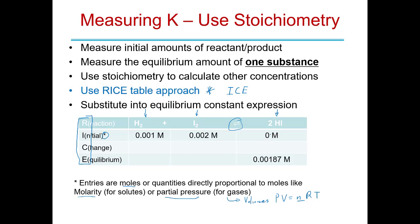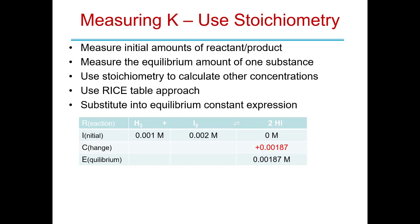We let the reaction come to equilibrium — maybe heating it to a desired temperature. Then we measure the concentration of HI using, say, spectroscopy: shining light on the sample and using calibration curves to relate the absorbance to molarity. The next row in the table is for the Change. For HI, it went from 0 to 0.00187 M, so the change is positive 0.00187 — it's increasing. Since products increase, reactants must decrease, so we'll have minus signs for those.